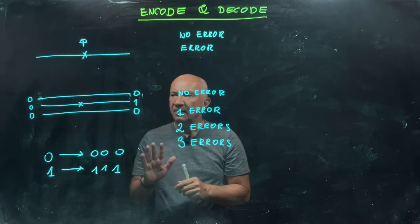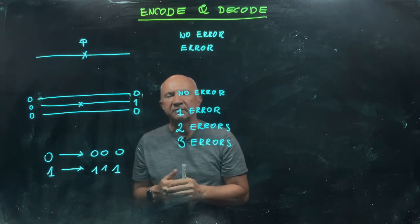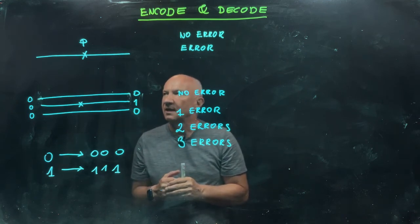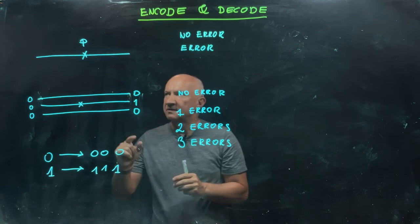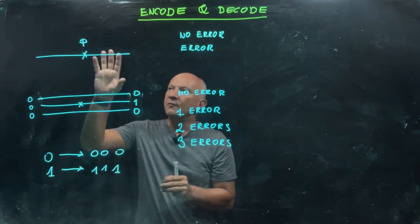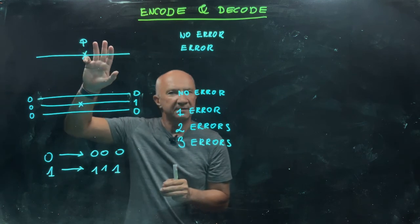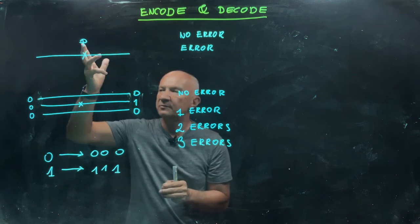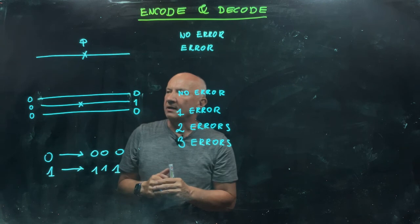To explain this, let me consider a very simple classical scheme known as a repetition code. Instead of sending one bit through the channel, knowing that the probability that the bit will be flipped is p, we use the channel three times.